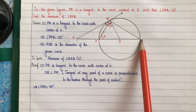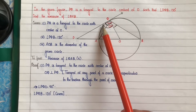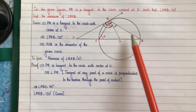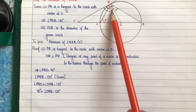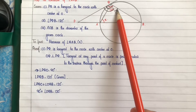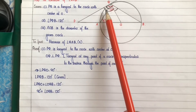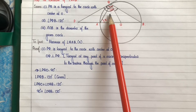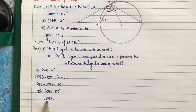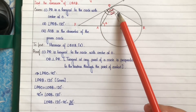Given that angle PQB is equal to 120 degrees, we can split it as: angle PQO plus angle OQB equals 120 degrees. Substituting angle PQO equal to 90 degrees, we get 90 degrees plus angle OQB equals 120 degrees. Therefore angle OQB is equal to 120 minus 90, which equals 30 degrees.